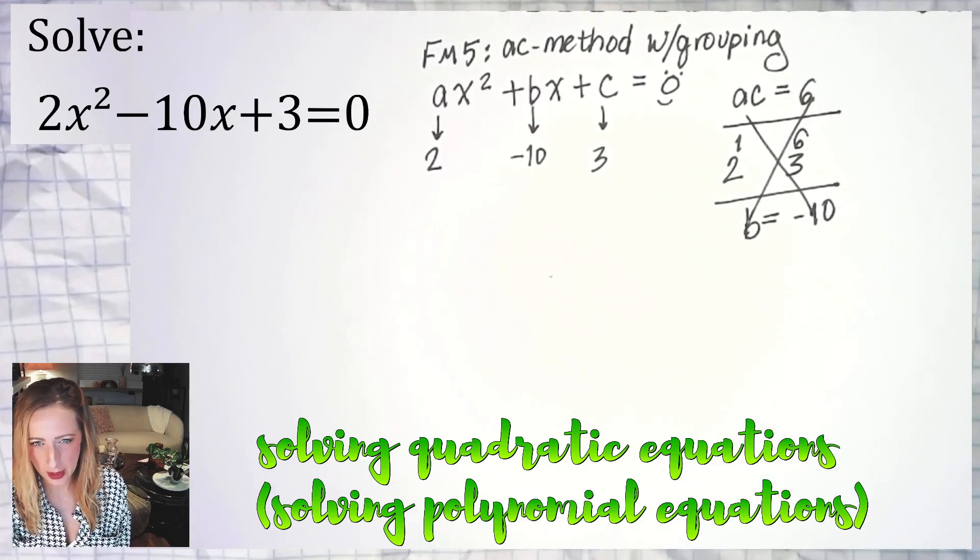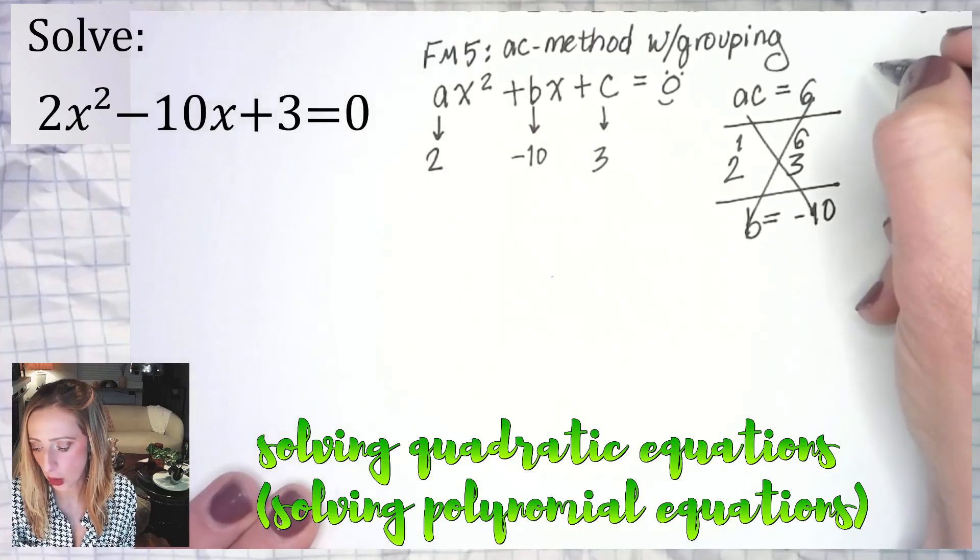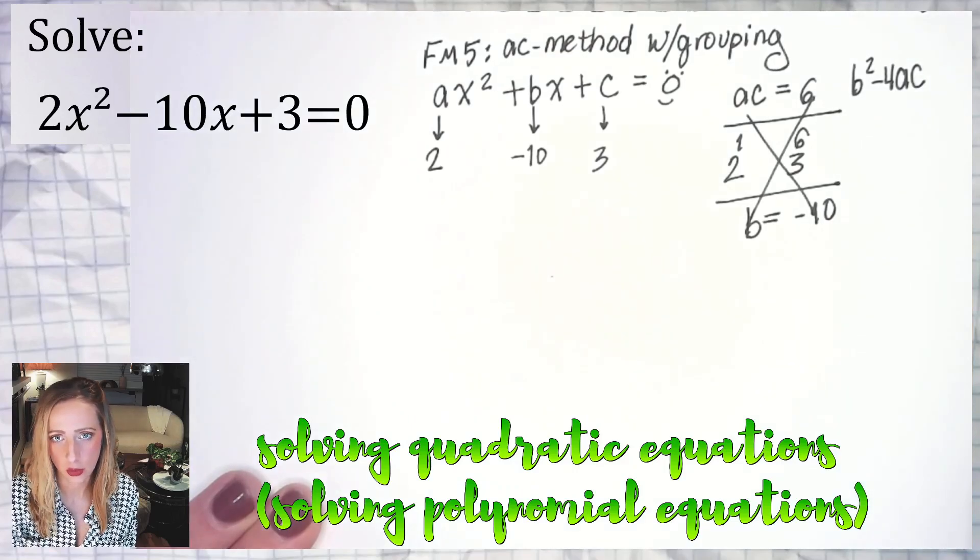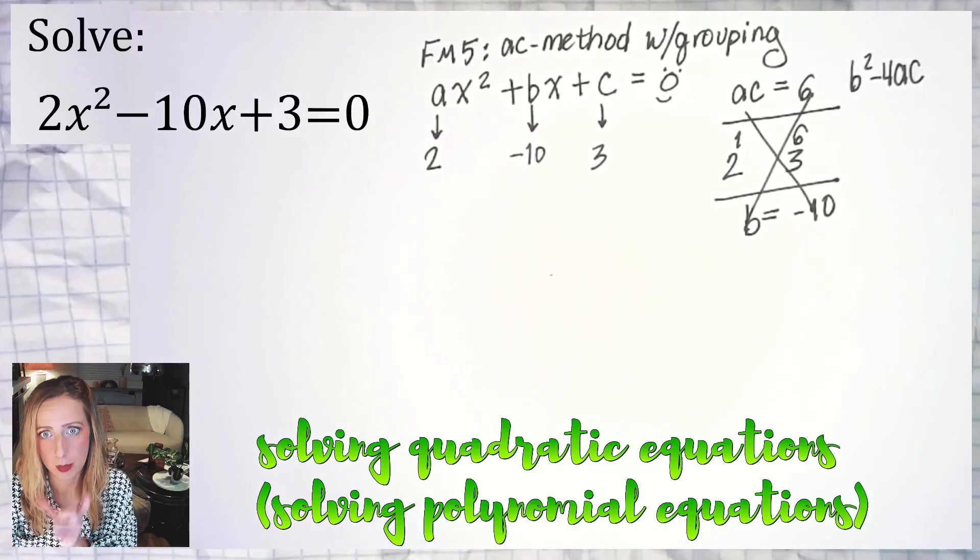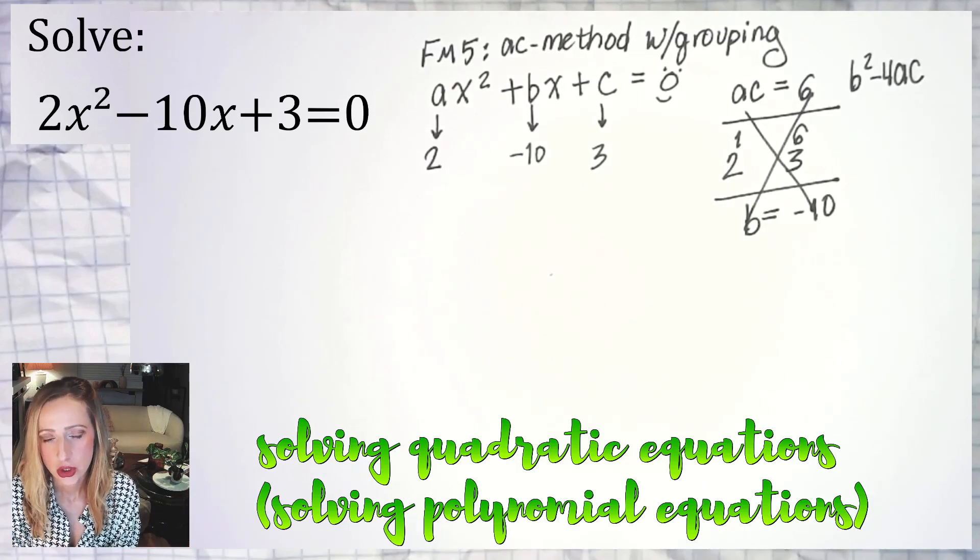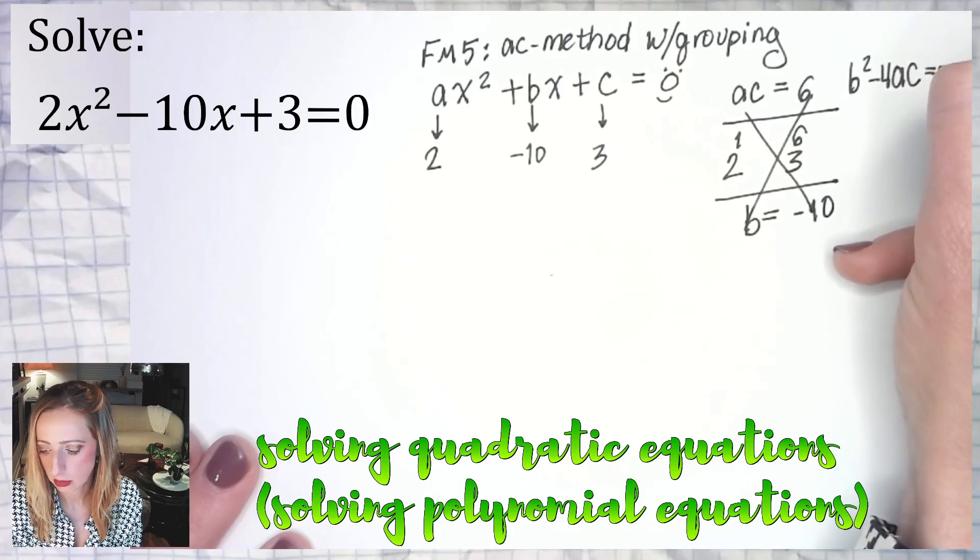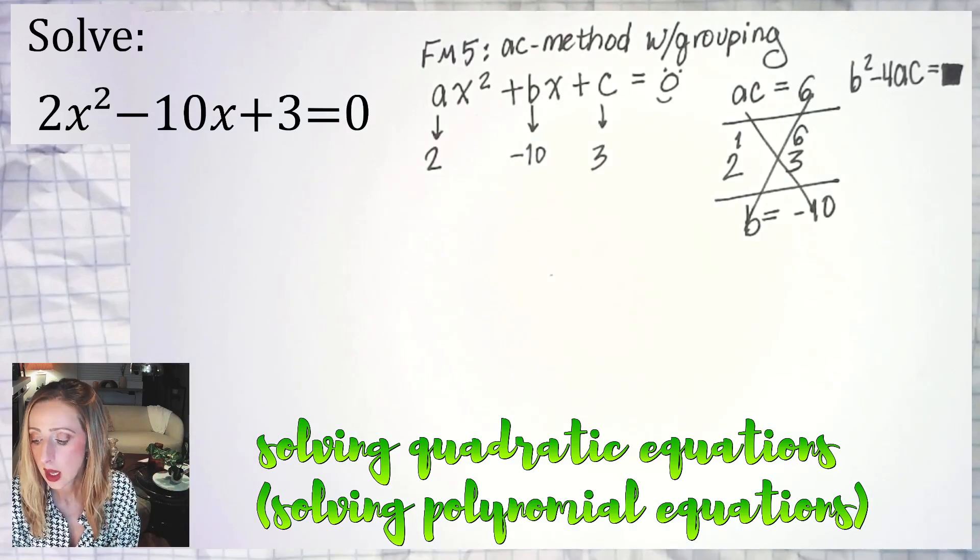That means it's probably not factorable unless you messed up. Another backup plan to check if something is factorable, you can check the value of B squared minus four AC. This is also known as what we call the discriminant of the quadratic formula. So if B squared minus four AC is equal to a perfect square, think 0, 1, 4, 9, 16, 25, 36, 49, 64, 81, that means it's factorable.